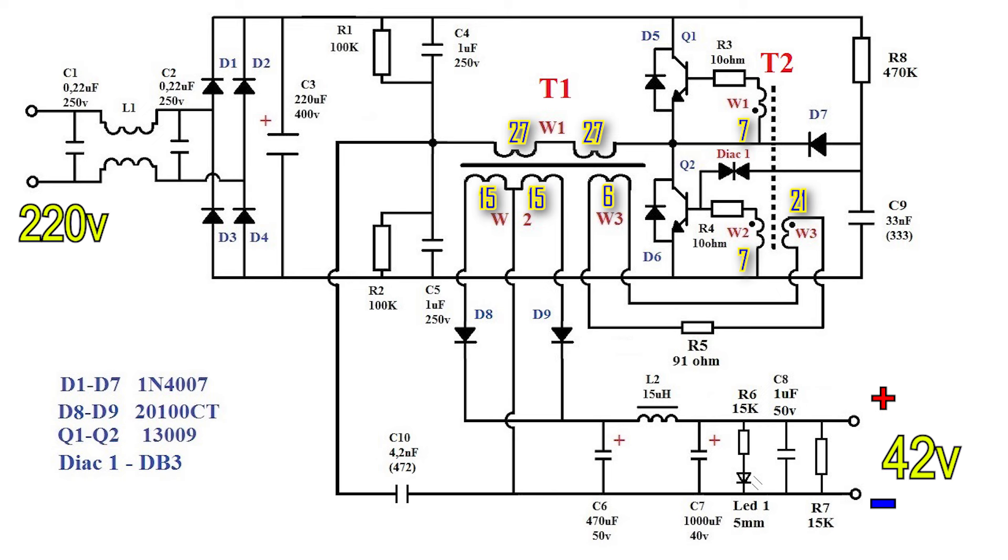Transistors 13,009 can be replaced with 13,007. If you assemble a power supply of less power, then you can use 13,005 or even 13,003.